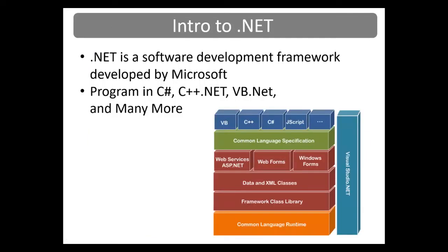The first programming language ever created was back in 1843 by Ada Lovelace, a female mathematician, before computers even existed. Programming languages have since evolved and include many tools that make development faster and easier, with each language having its own syntax and rules. .NET is a software development framework developed by Microsoft in 2002. You can write programs in it with Visual Studio in different high-level object-oriented languages like C Sharp, C++, .NET, and more. C Sharp is similar to Java and is derived from C++ and Visual Basic. .NET languages allow you to develop applications for desktops, phones, and the web. Note that the latest versions of Windows may require installing the .NET framework separately.